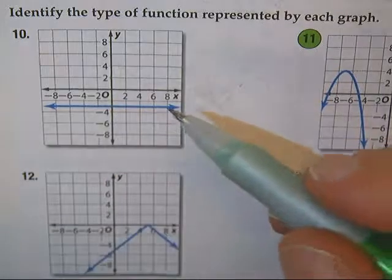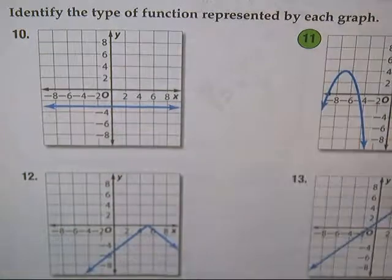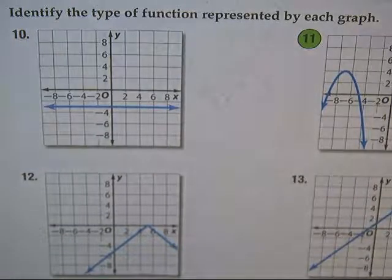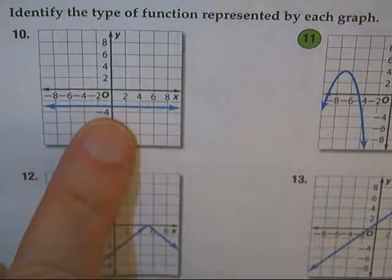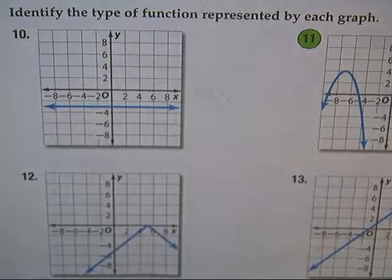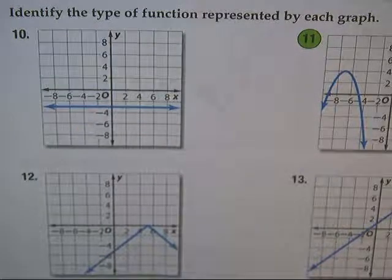Y is always 3, but instead of saying linear, they want you to call that one constant. So it's always constant — always the same number. Y is always the same number.